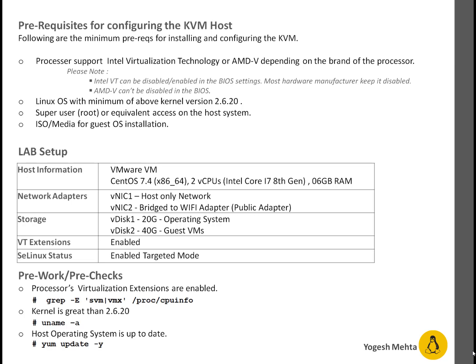My lab machine is a VM running on VMware Workstation with CentOS 7.4 installed. In terms of resources, it has two vCPUs which are Intel Core i7 8th gen processors and 6 GB RAM. From a network point of view it has two NIC cards — vNIC1 and vNIC2. The first NIC card is used for host-only network; the second NIC card is bridged to a Wi-Fi adapter for public communication, basically internet connectivity.